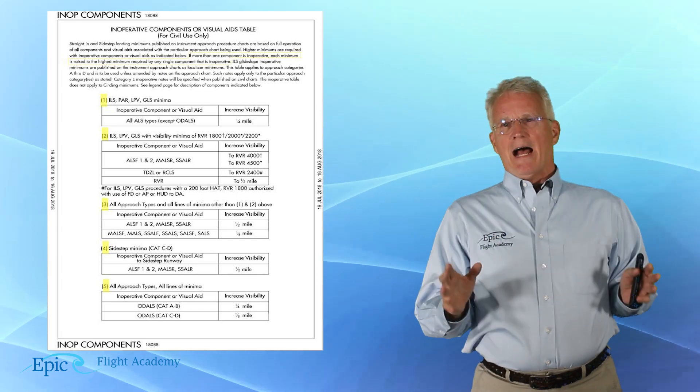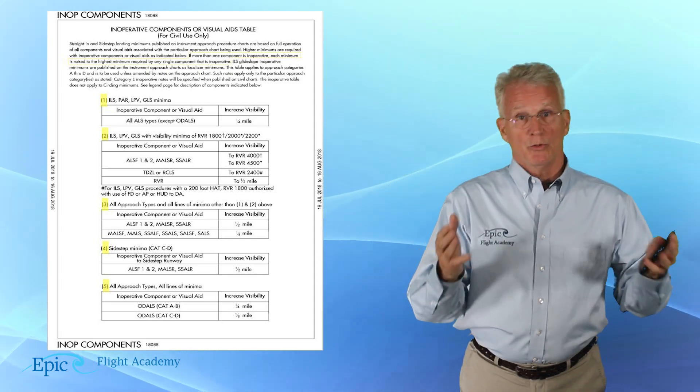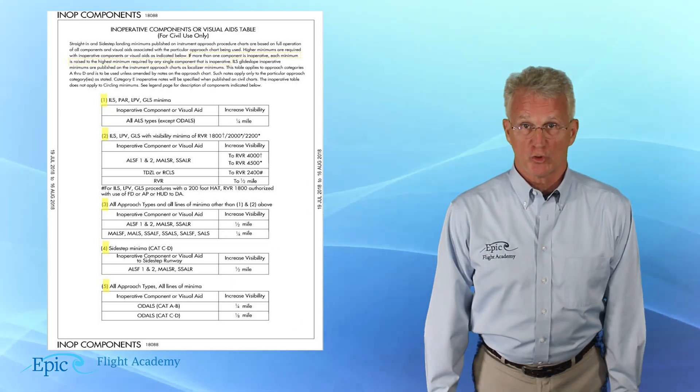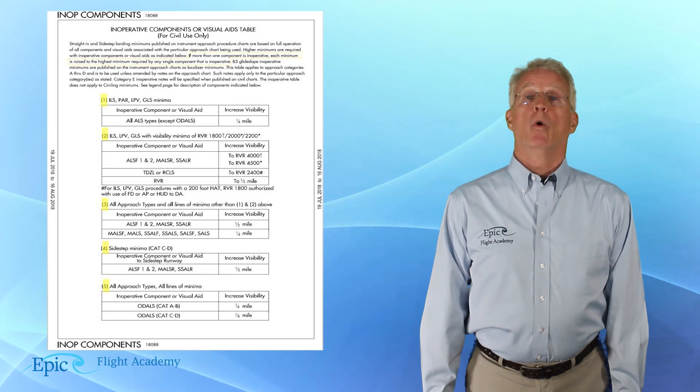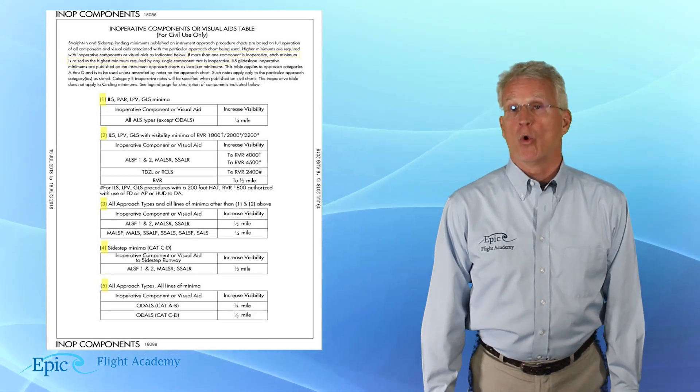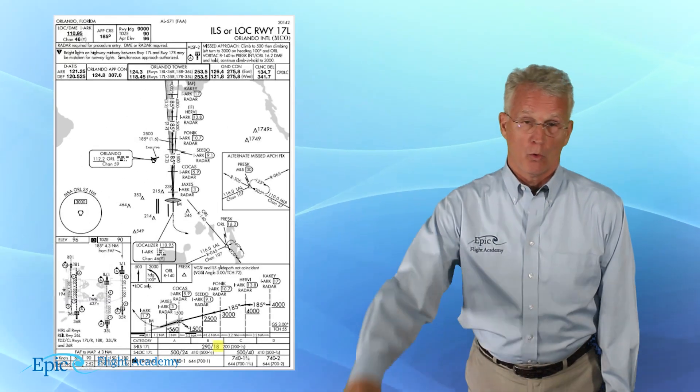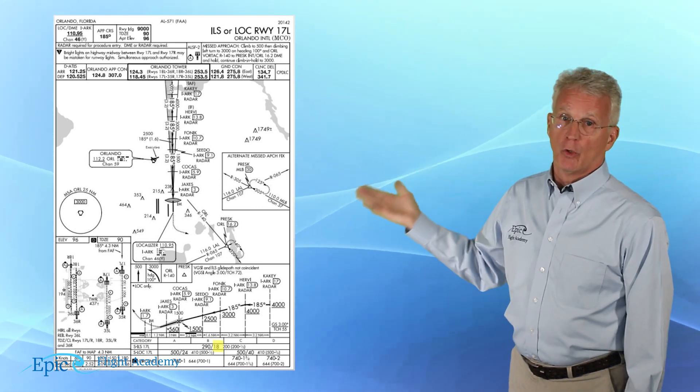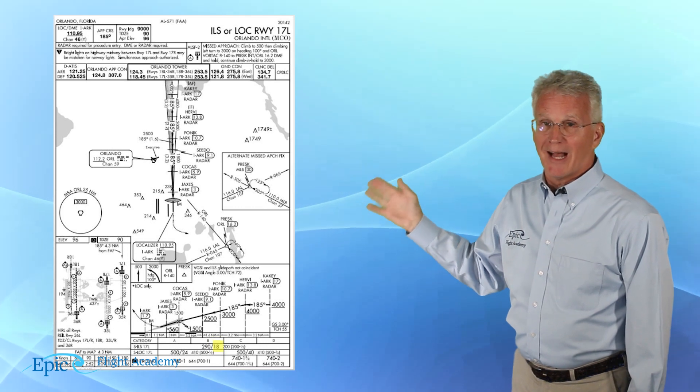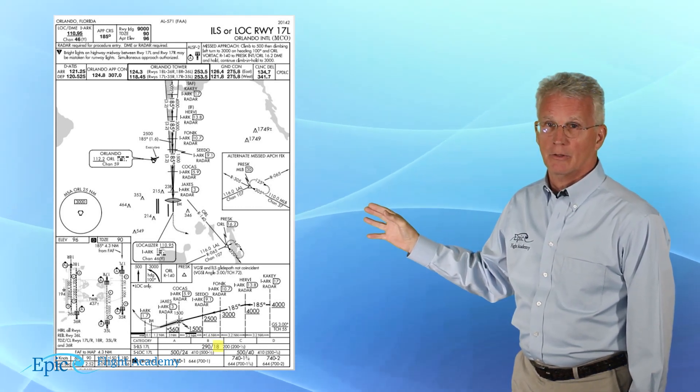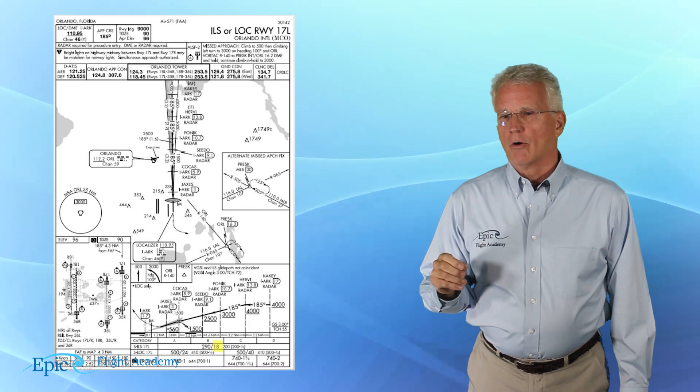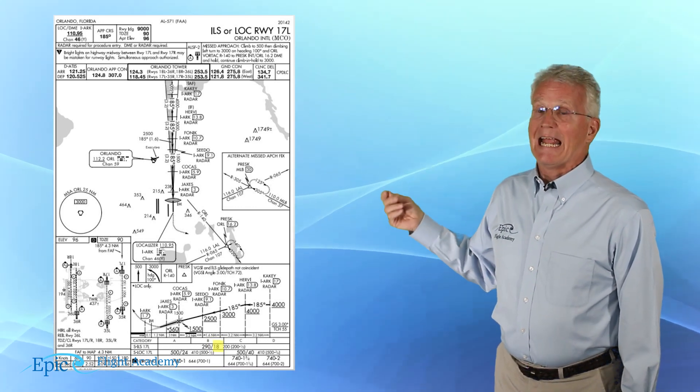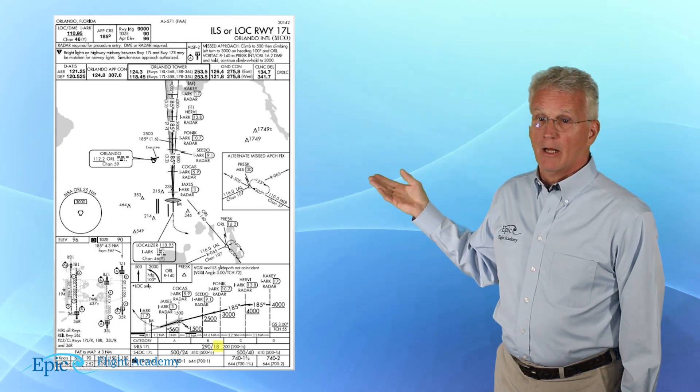So, let's see how this table works by using a scenario. In our scenario, we're going to be shooting the straight-in ILS 17 left at Orlando International, or MCO. And you can see that instrument approach procedure shown here. Notice on this procedure, the minimums for our approach are 290 feet MSL and 1800 RVR.